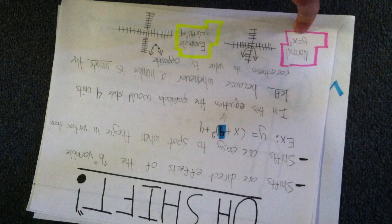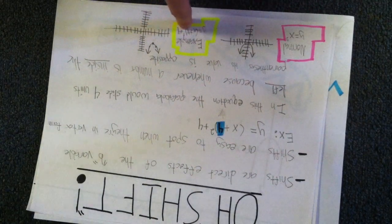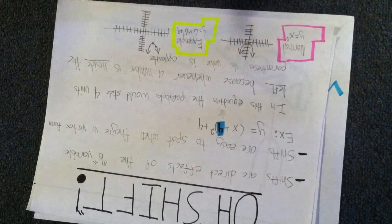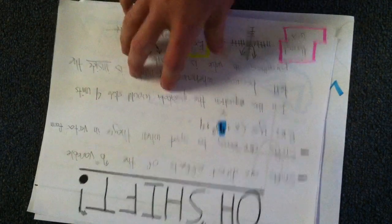This is the normal parabola of a normal quadratic equation, y equals x squared. And this is the example, as you can see, a shift of 4 units left and 4 units up.